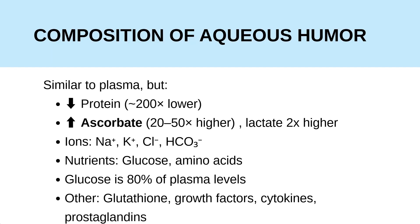What about ascorbate? Ascorbate, which is vitamin C, is 20 to 50 times higher in the aqueous than in plasma. This is because, in order to protect the cornea and the lens from oxidative damage, vitamin C is actively transported from plasma to the aqueous humor.